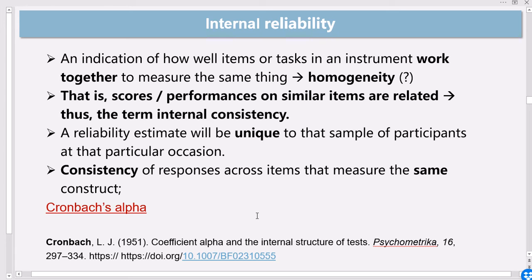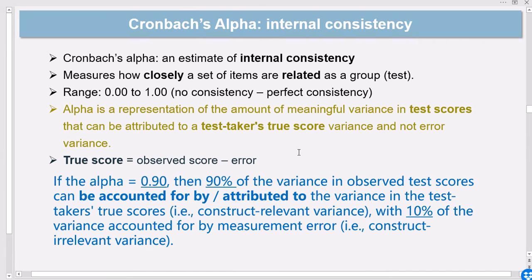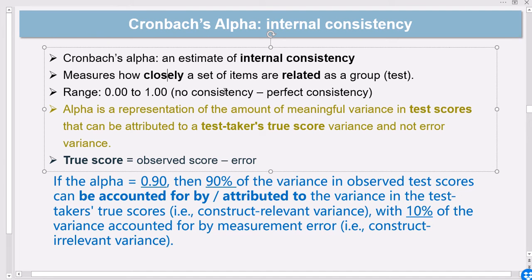In almost every paper where we read anything about measurement, especially if people use classical test theory, you'll see that they have reported Cronbach's alpha internal reliability statistic. Cronbach's alpha indicates how closely your set of items are related to the test. The range of Cronbach's alpha is usually taken to be between zero and one.